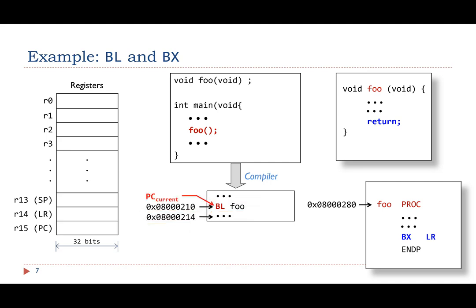Suppose PC currently points to the BL instruction. When the BL instruction runs, it first sets the link register to the value 0x800214, which is equal to the PC current plus 4.